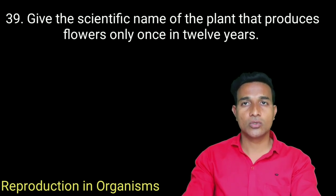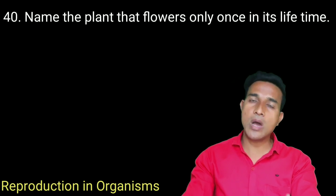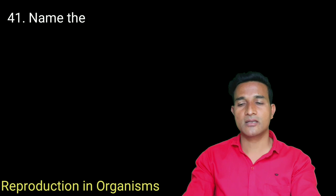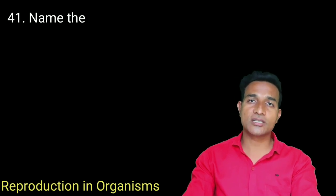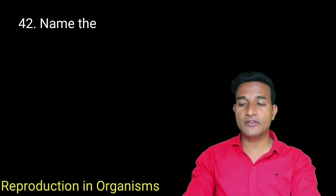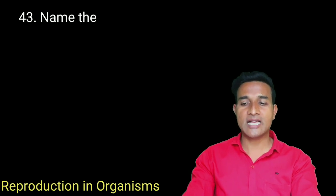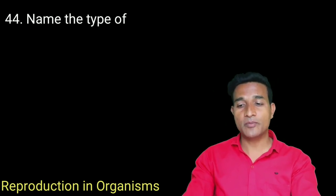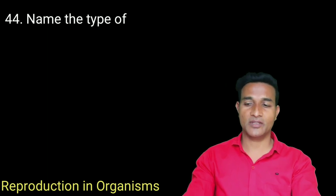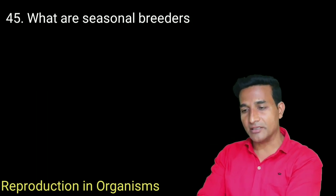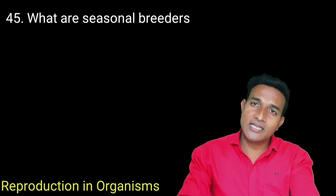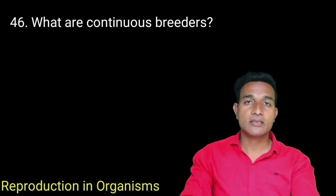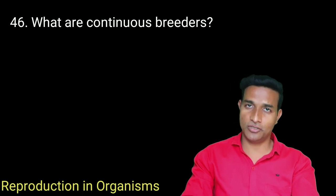Give the scientific name of the plant that produces flowers only once in 12 years — Strobilanthus kunthiana. Name the plant that flowers only once in its lifetime — bamboo. Name the reproductive cycle that occurs in females which are seasonal breeders — oestrus cycle. Name the reproductive cycle that occurs in females which are continuous breeders — menstrual cycle. Name the type of reproductive cycle in non-primate mammals — oestrous cycle. In primate mammals — menstrual cycle. Seasonal breeders are reproductively active only in certain seasons; continuous breeders are reproductively active throughout the year during the reproductive phase.